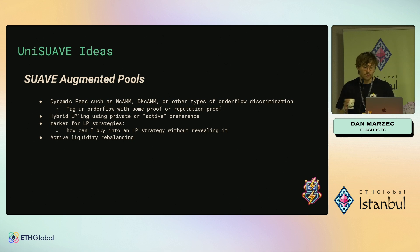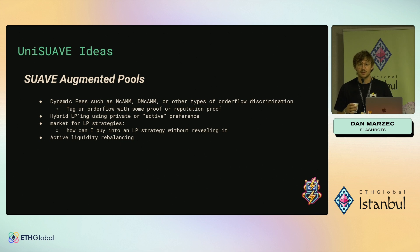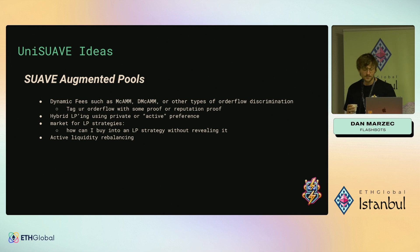You could also tag your order flow with proofs or a reputation proof NFT. A cool idea would be to use Axiom and create some type of proof of your trading history — showing that you were always treating LPs very fairly, and therefore you should get a good fee.